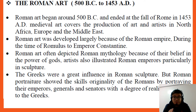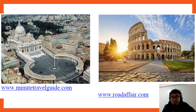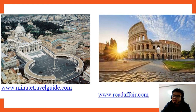Examples of great Roman art include the Aqueduct of Segovia in Spain, the iconic dome of Florence, St. Peter's Basilica, and the Colosseum. These images help us understand why Roman art was focused on politics.